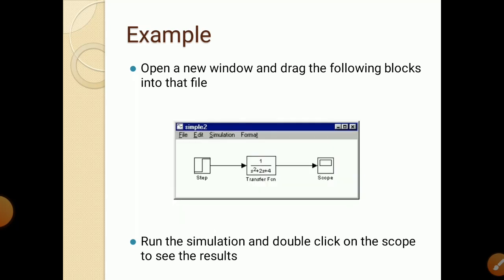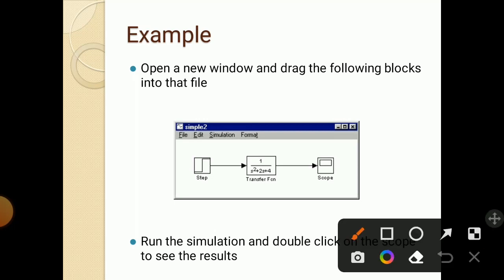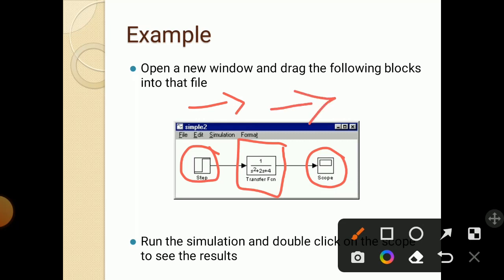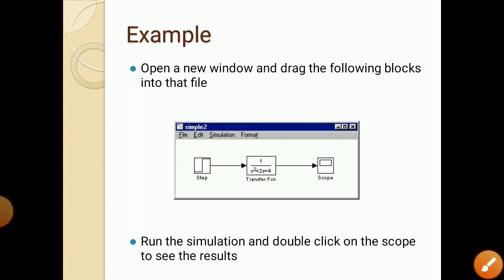Another example: open a new window and drag the following blocks. Now step input is taken, scope is the output, and in between them one transfer function is taken. A transfer function represents one system. The transfer function is taken as 1/(S² + 2S + 4), and all these are connected with arrows. Run the simulation and double click on the scope to see the results.